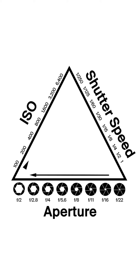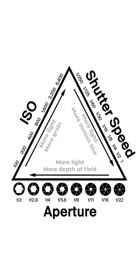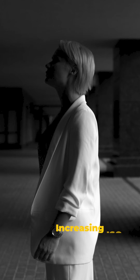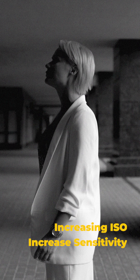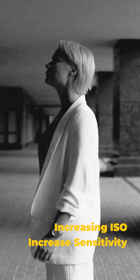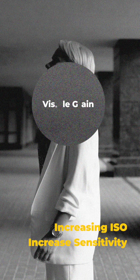All three of these elements work together to expose the image. Each has its own purpose, while also having its own side effect. Increasing ISO will increase how bright the image is, but will also increase the amount of visible grain.